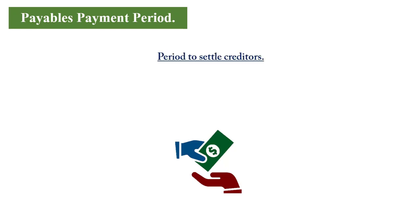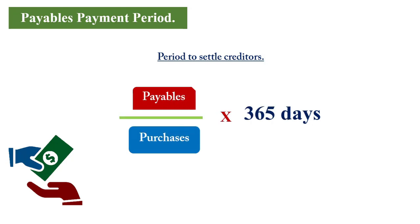The payables payment period looks at how long it takes the business to pay debts owed to suppliers. The formula is: payables divided by purchases (or cost of sales in some cases), multiplied by 365 days. If the days are lower compared to prior periods, industry metrics, or a competitor, it means you are meeting your agreements, keeping suppliers happy to continue trading. If higher, investigate whether it was agreed with the supplier or if the business is flouting the terms or facing challenges.